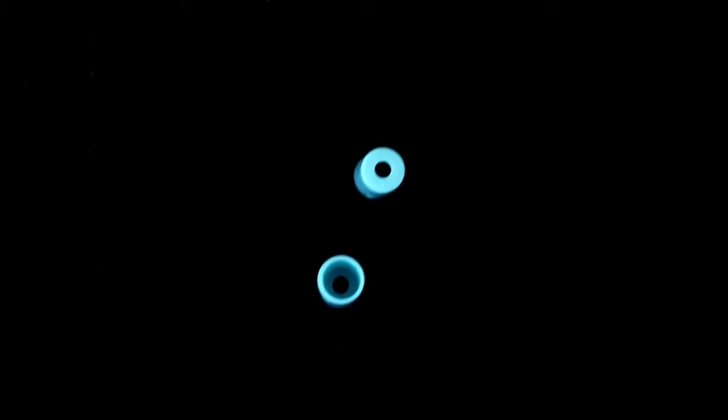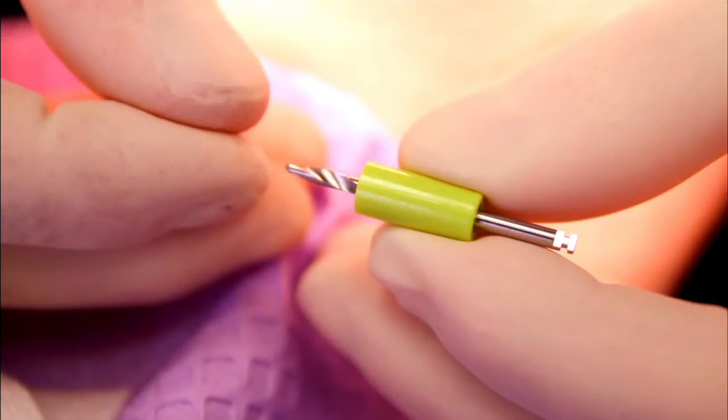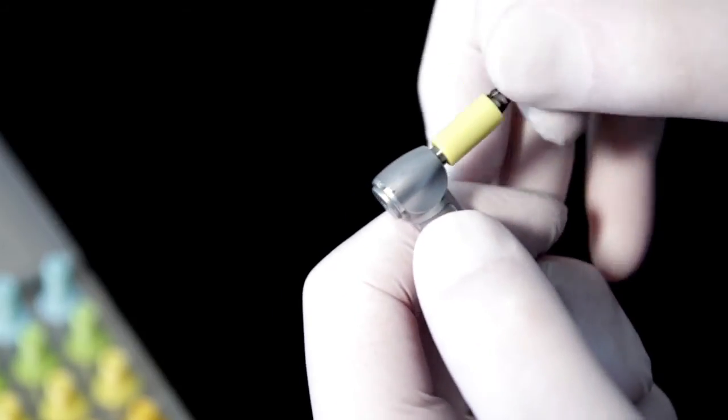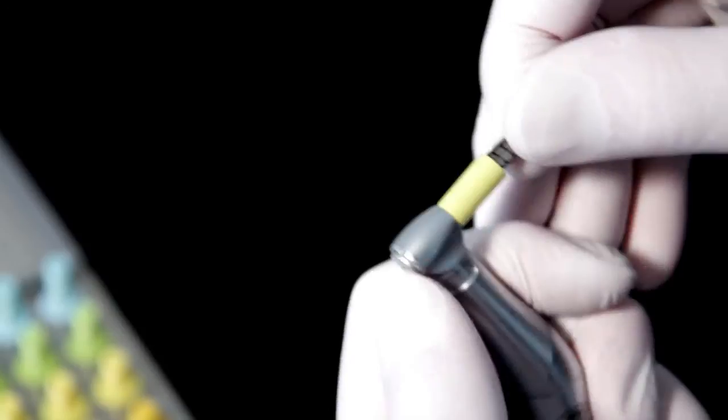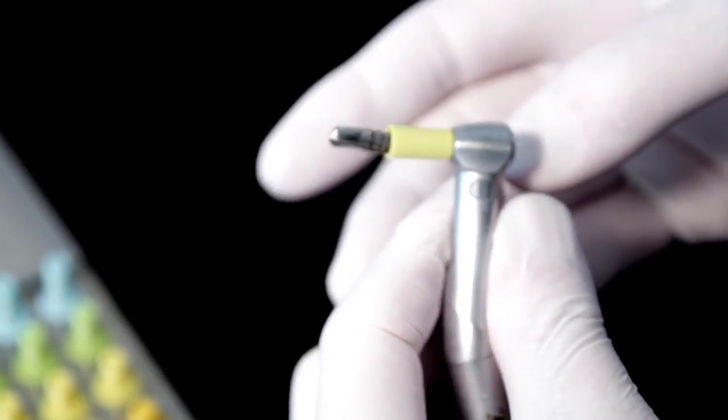There exist two models of drill stops. The original model slides over the drill, and when latched to the handpiece, is locked in place. It fits snugly, will not come off, will not generate heat, and will not damage the handpiece.